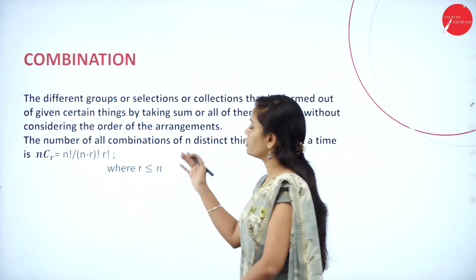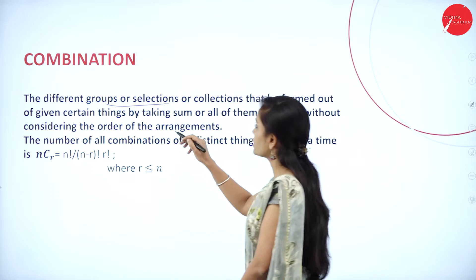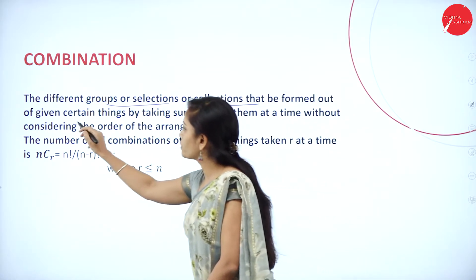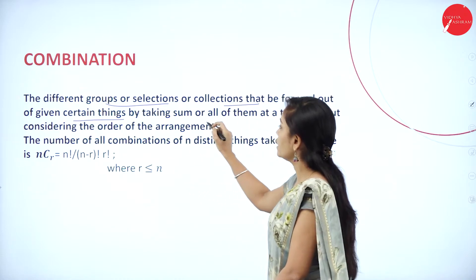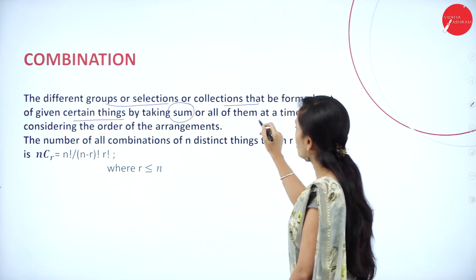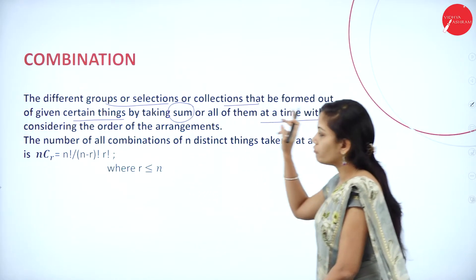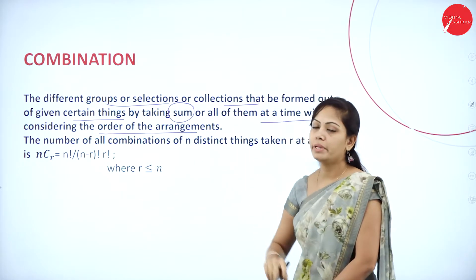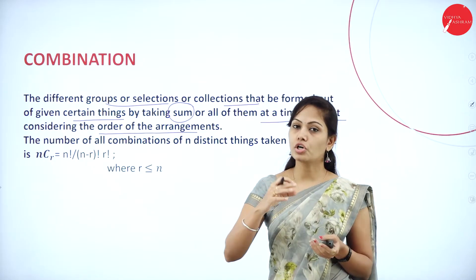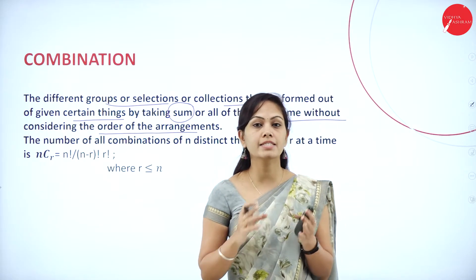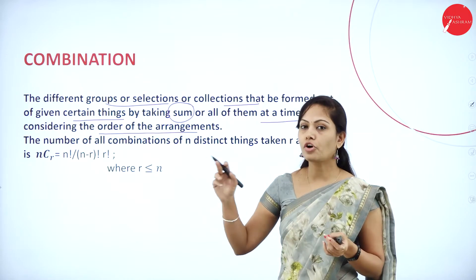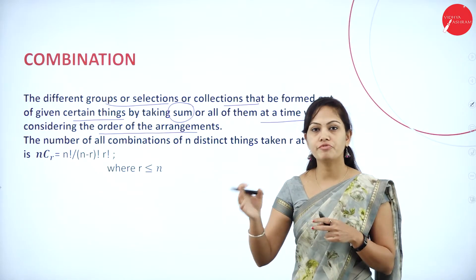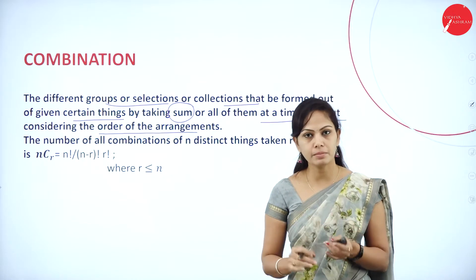Combinations are the different groups, selections, or collections that can be formed out of given certain things by taking some or all of them at a time, without considering the order of arrangements. In permutation, the order of the members is taken into consideration, but in combination, the order is not a matter. That is the difference between combination and permutation.